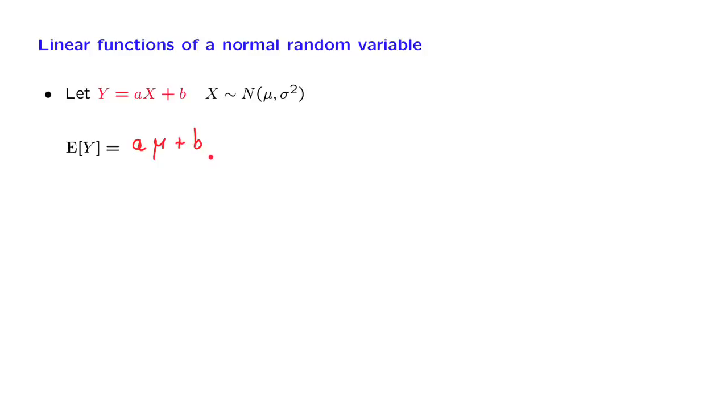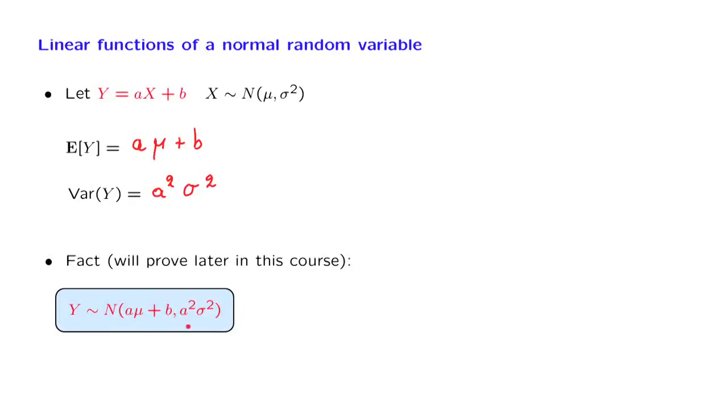What is the variance of y? We know what is the variance of a linear function of a random variable. It is a squared times the variance of x, which in our case is sigma squared. So there is nothing new so far, but there is an additional important fact. The random variable y, of course, has the mean and variance that we know it should have, but there is an additional fact, namely that y is a normal random variable. So normality is preserved when we form linear functions.